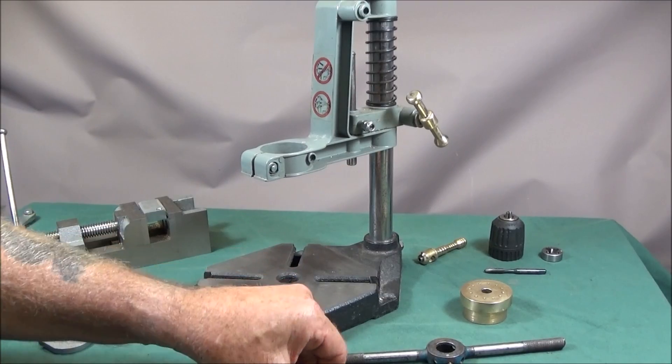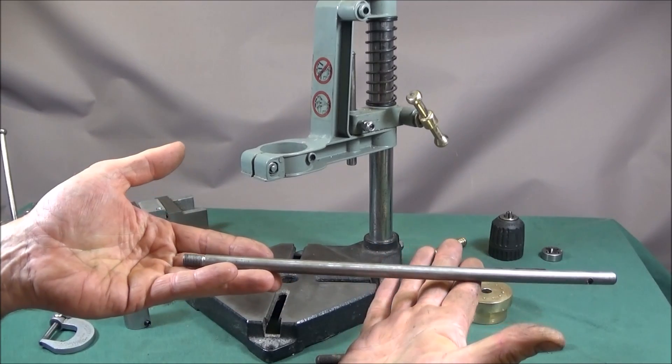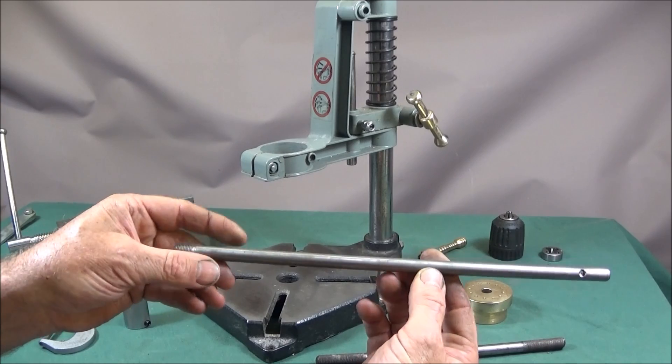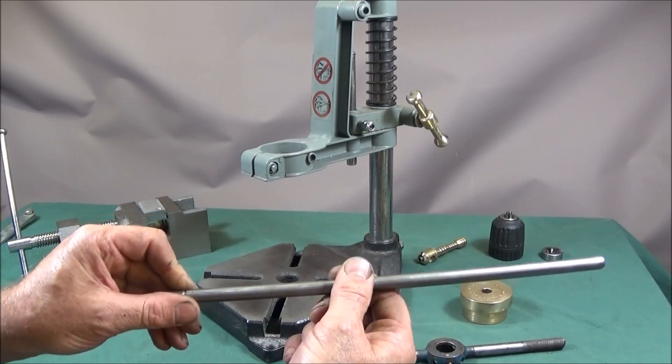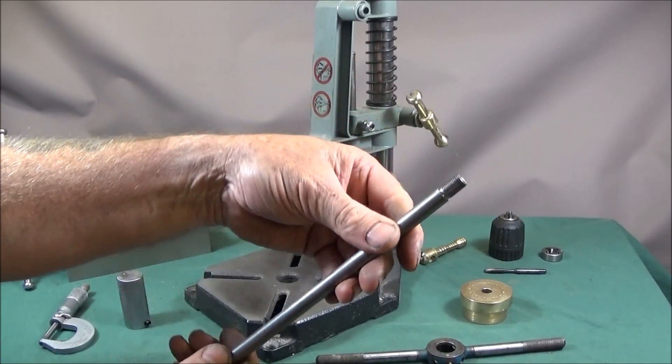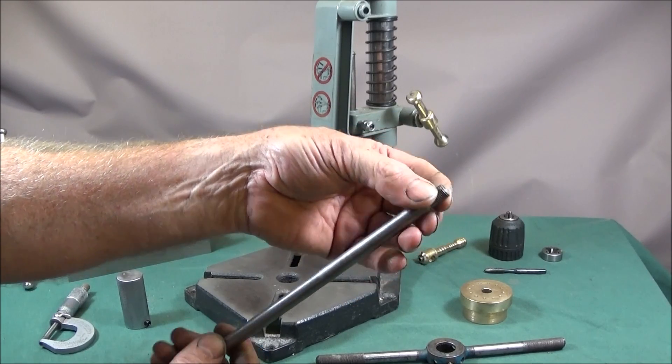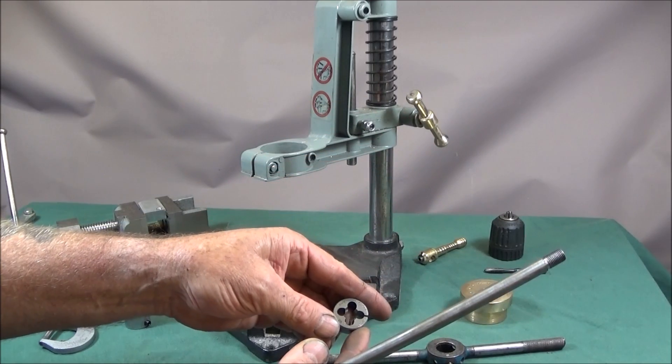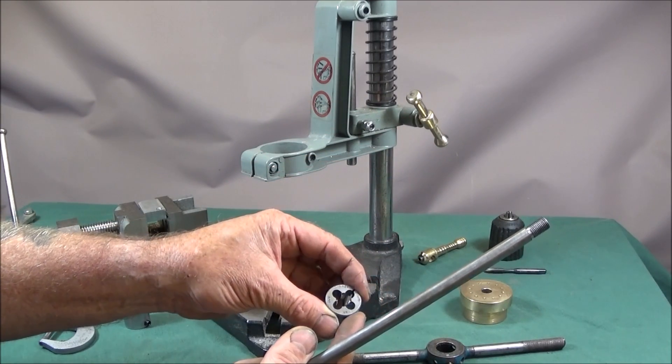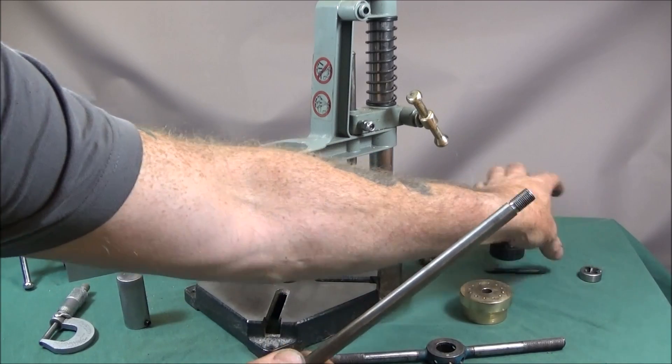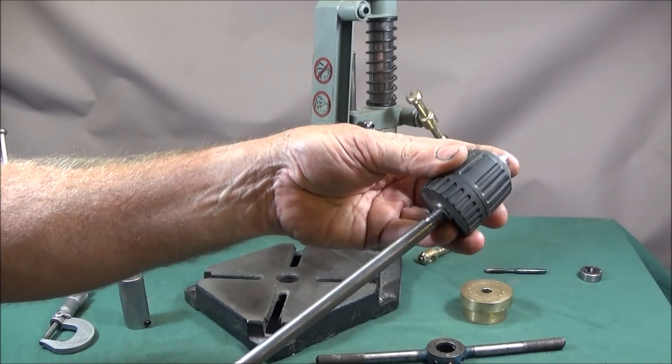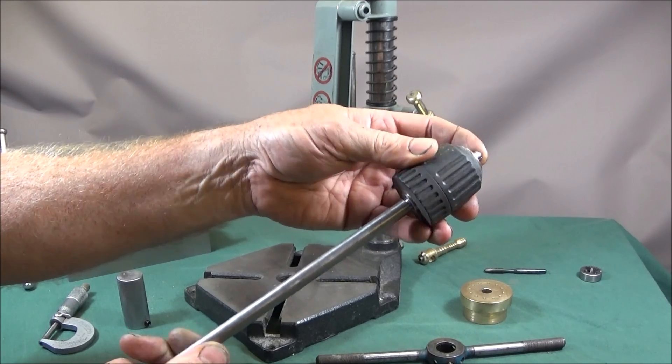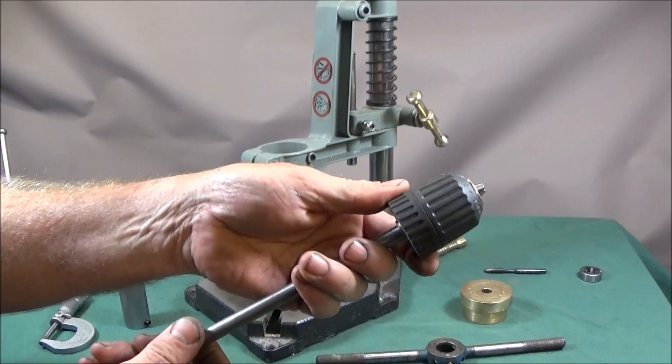So the first thing I did was get a piece of mild steel, you can have whatever diameter you like around say half an inch, this one's just under. I turned the end and die cut it's 3/8 x 24 UNF and that's the thread for most Jacobs chucks or these quick release keyless chucks.